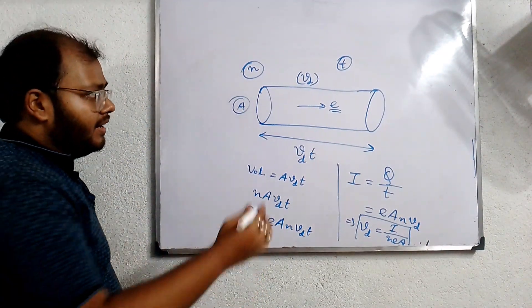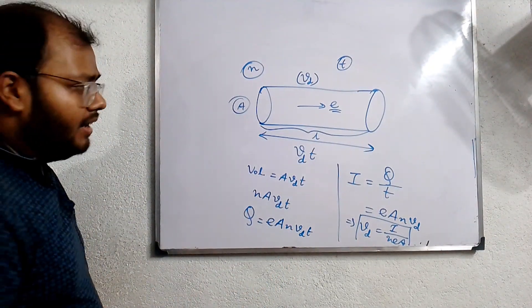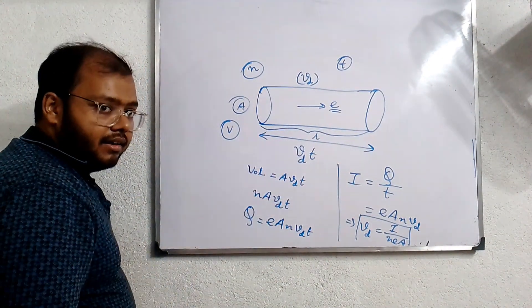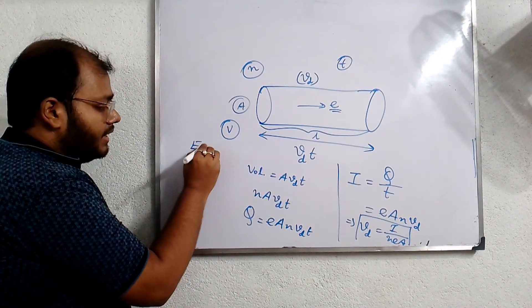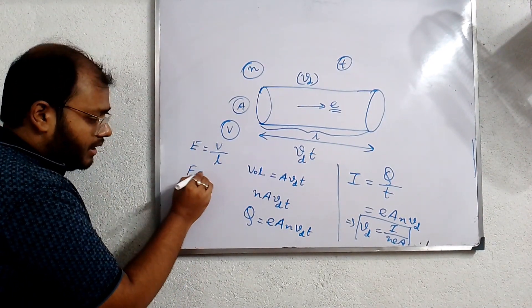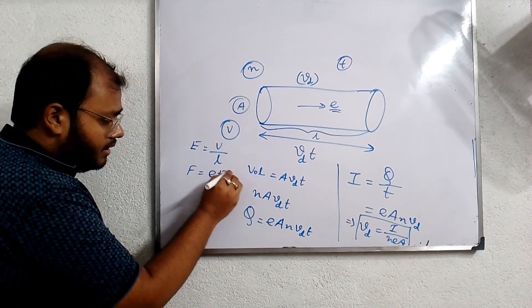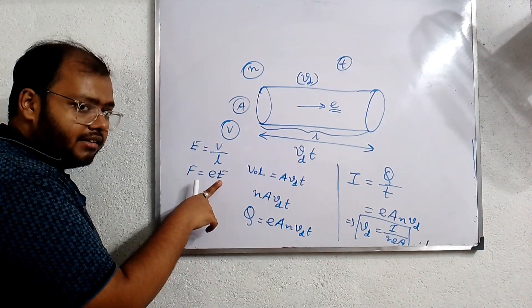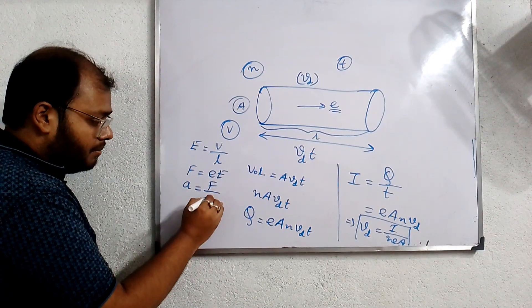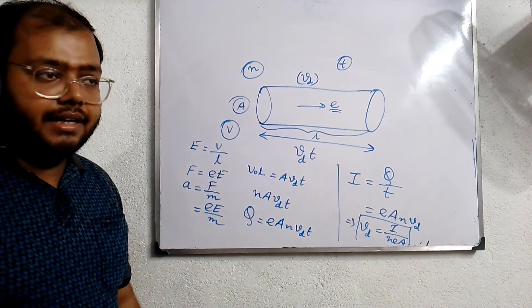If we take the conducting wire of length L, and a potential difference V is applied across the wire, then electric field E = V/L. Now, force on the electron will be F = e·E (charge × electric field). So the acceleration of the electron will be force divided by mass of the electron, that means a = e·E/m.